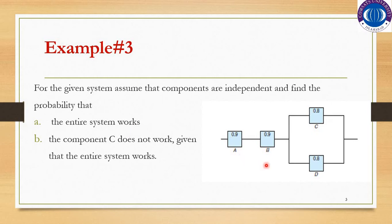If you concentrate on the diagram, we have a system with four components A, B, C, and D. Component A will work with probability 0.9, component B will work with probability 0.9, component C will work with probability 0.8, and component D will work with probability 0.8.